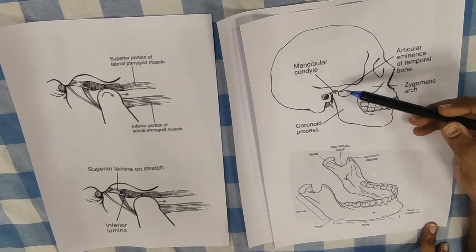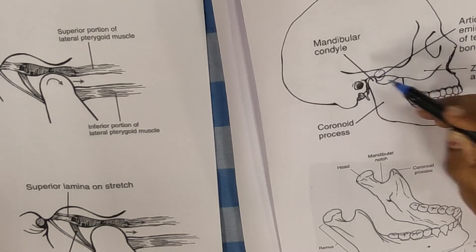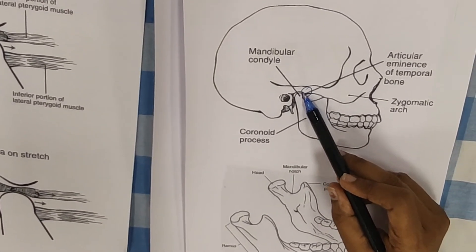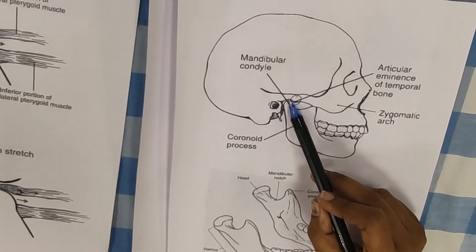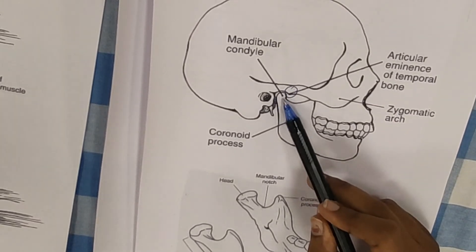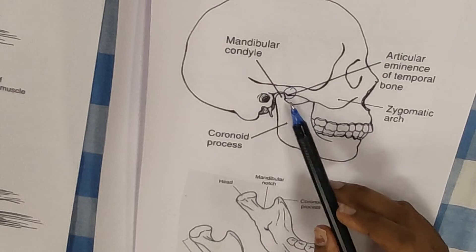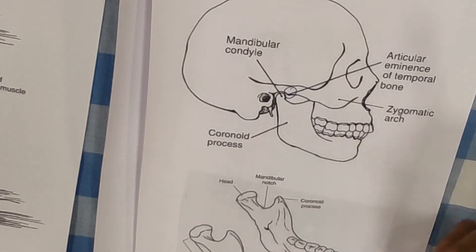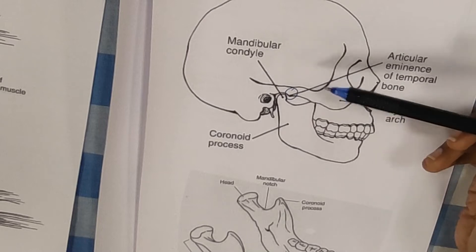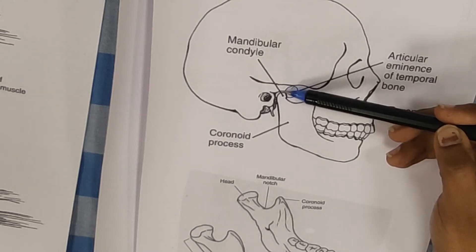Looking at the articulating surfaces on the temporal side, the main articulating surface is the articular eminence. The articular eminence is situated slightly on the anterior portion, and behind it there is a small fossa called the glenoid fossa. The mandible does contact the glenoid fossa, but the majority of the time the mandible is in contact with the articular eminence. So the proximal articulating surface on the temporal bone is the articular eminence, with a small portion just behind it called the glenoid fossa.